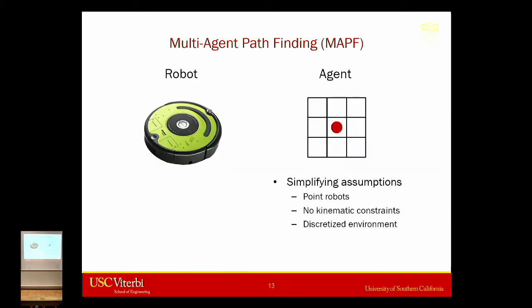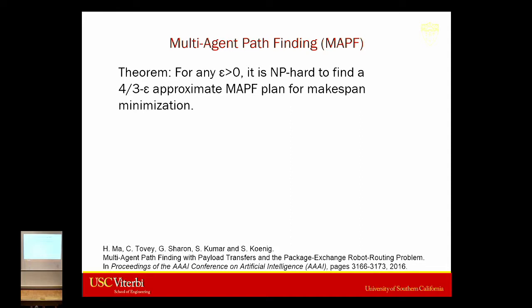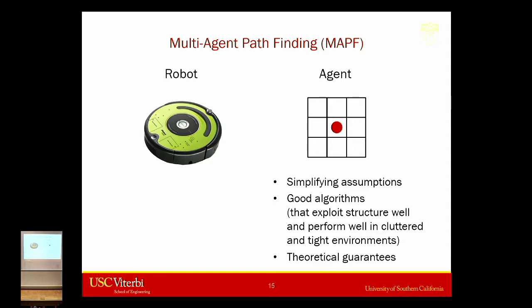You've now seen two pathfinding problems on real robots that we want to solve. The way we solve them in AI is through abstractions — we simplify them. We often use point robots, we don't model kinematic constraints such as velocities, and we work in a discretized grid environment. Even with all these simplifying assumptions, the community knew for a long time that this is an NP-hard problem. But these abstractions are really helpful because they often make the structure of the problems more obvious, which helps us exploit that structure.